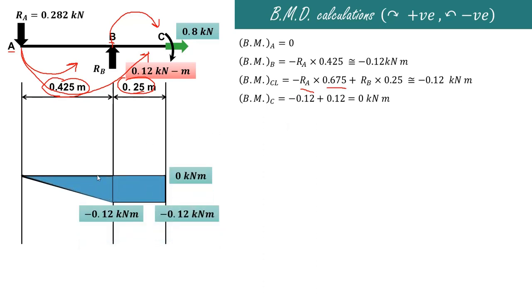So the bending moment values are: at point A it is 0, at point B it is minus 0.12 kN·m, just to the left of C it is minus 0.12 kN·m, and exactly at point C it is 0. In this way we can draw the shear force and bending moment diagram for a beam with an end moment as shown in the figure. Thank you very much for watching.